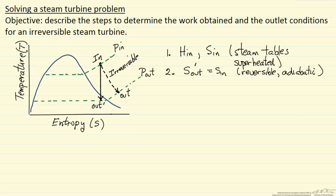Since we know the outlet pressure — that would be given in our problem statement — we now know the outlet entropy. We have two properties of steam or water, and any two properties uniquely determine all the other properties. So we can determine, again from the steam tables, H prime out — the enthalpy out for the reversible process — because we know the pressure leaving and we know S prime out.